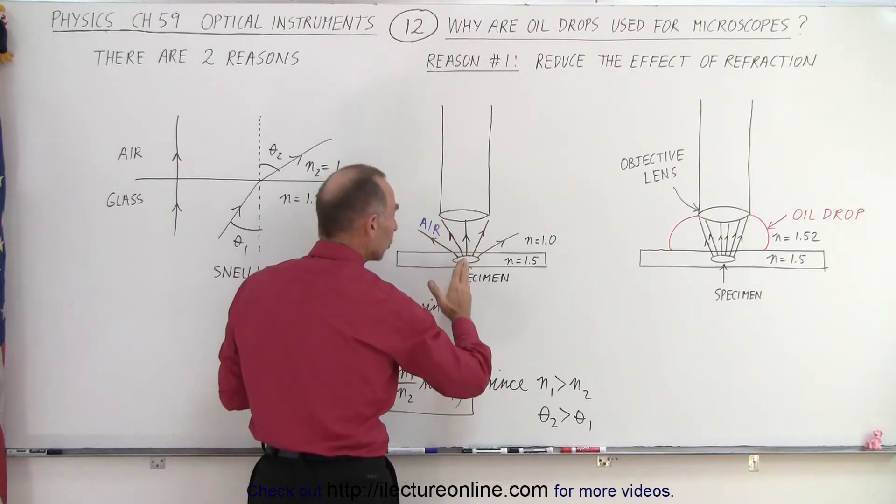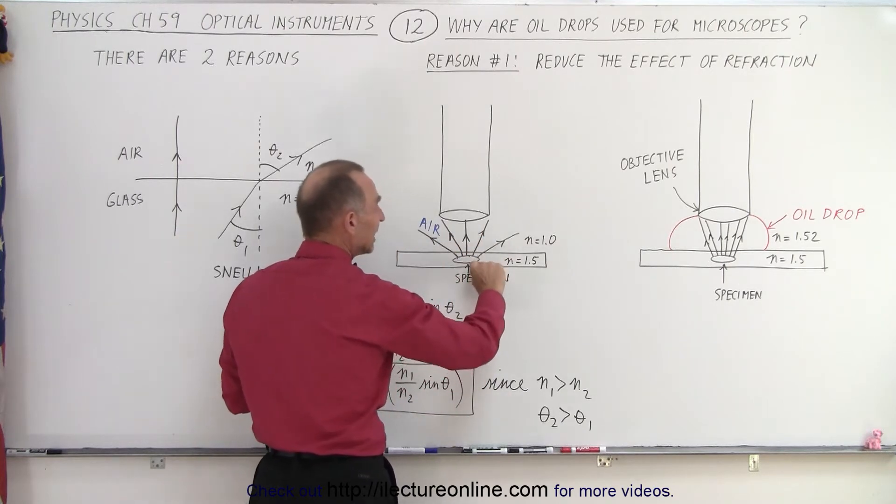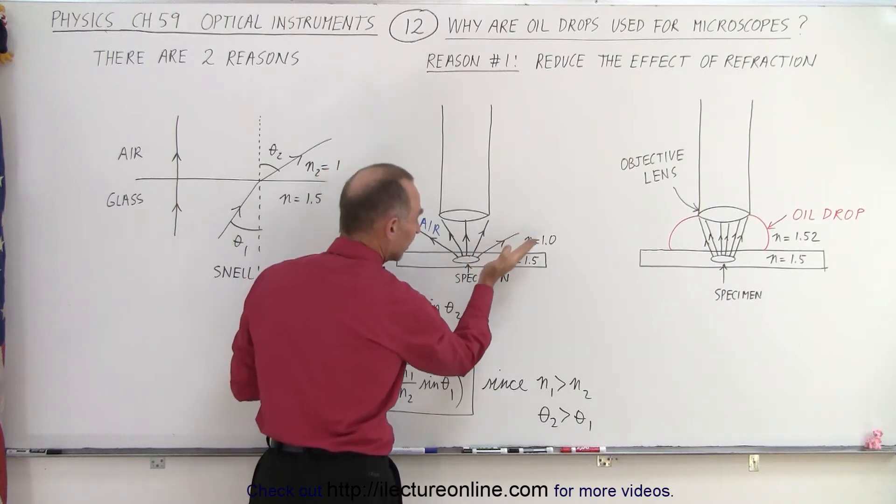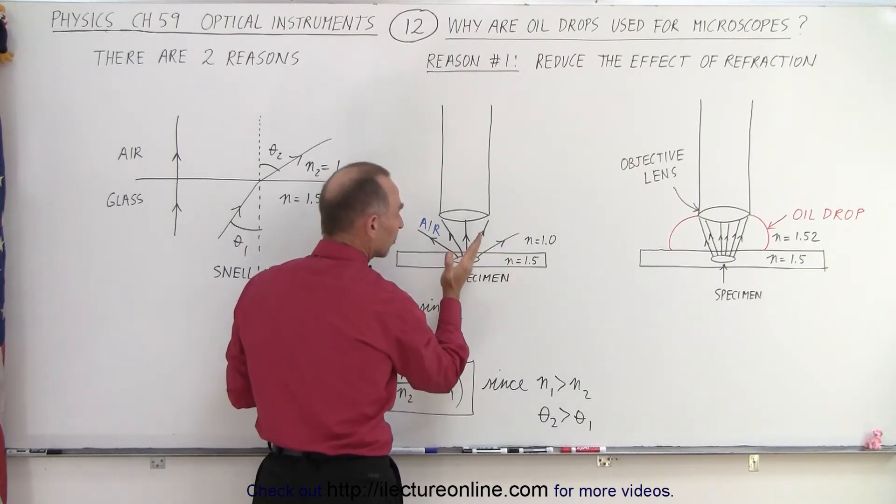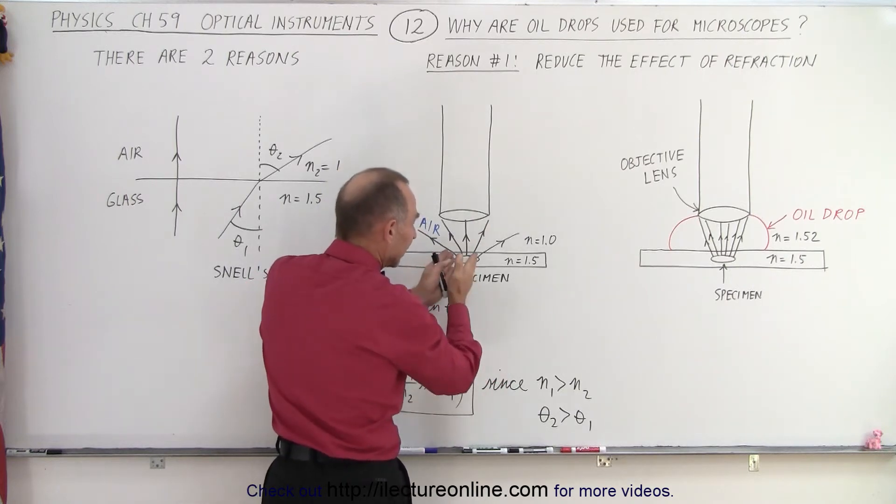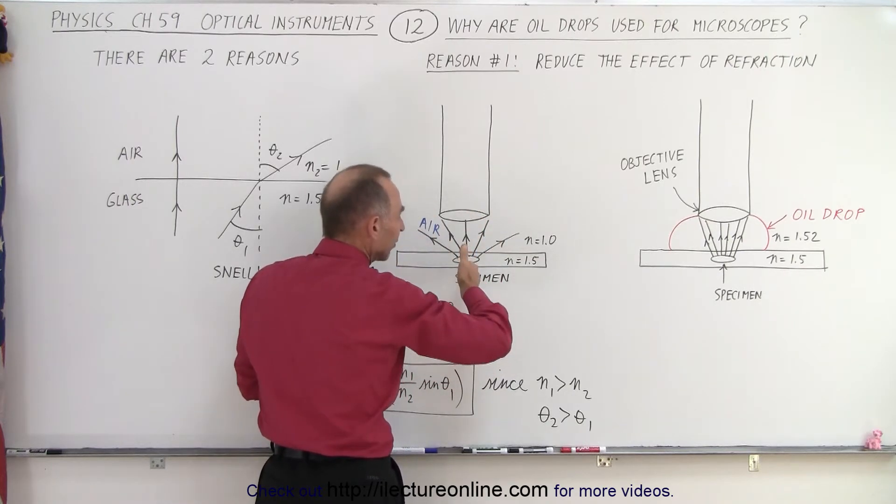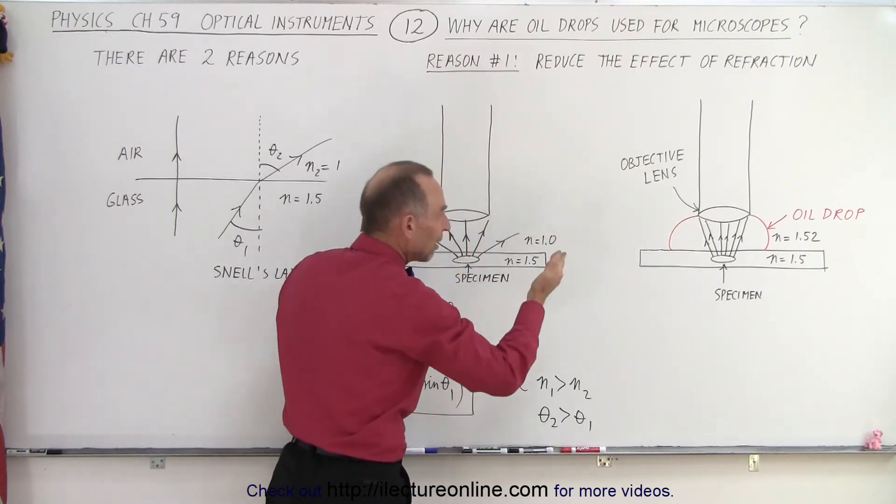But any light that shines at an angle will get refracted and the angle on the other side of the boundary between glass and air will be greater than the angle going into the boundary from glass to air. And you can see that these rays on the outside that tend to shine in this direction, will simply not make it into the lens because they'll be refracted away from the lens.